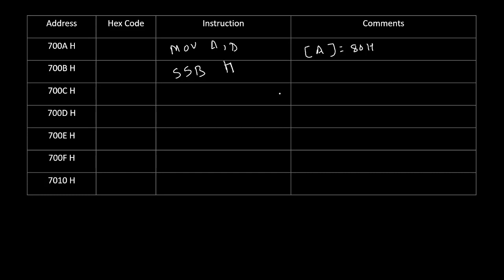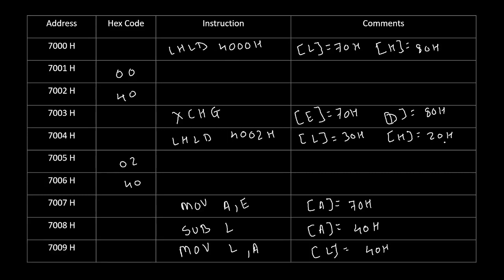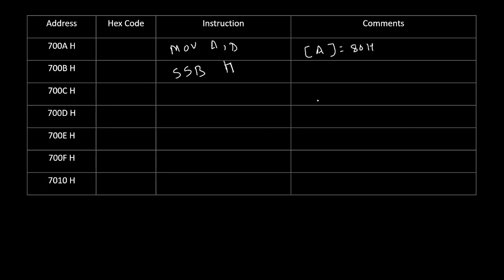Because of SBB H, the value of H (20H) gets subtracted from the accumulator with borrow. The accumulator was 80H, so 80H minus 20H gives 60H. Now this value is in the accumulator, but we want it in the H register. So we write MOV H,A. The H register now takes the value 60H.